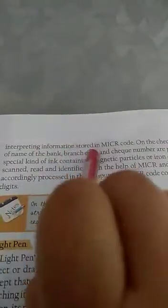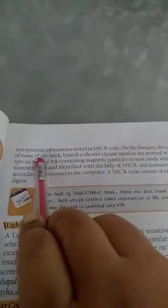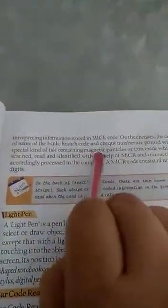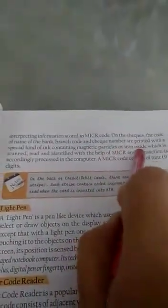MICR is a device which is used by banks for processing of checks by interpreting information stored in the MICR code. On the checks, the code of the name of the bank, branch code and check number are printed with a special kind of ink containing magnetic particles or iron oxide.